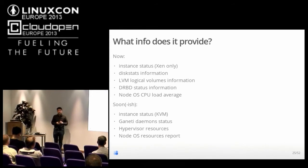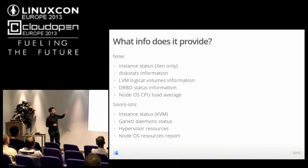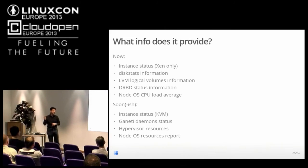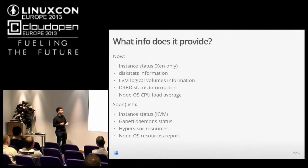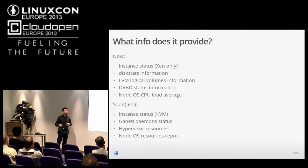What information does the monitoring daemon provide? Currently it provides information about the status of instances — for now only for Xen instances, since we didn't yet have time to implement the KVM and LXC versions. It provides information about the status of disks, specifically from proc disk stats. It provides information about LVM logical volumes used in the system, information about the status of DRBD, and information about average CPU load on the various nodes.